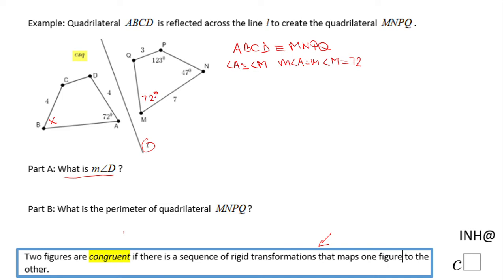Now we can find angle Q. If you notice, this is a quadrilateral, so the measure of angle P plus angle N plus angle M plus angle Q equals 360 degrees. Angle P is 123 degrees, angle N is 47 degrees, and angle M is 72 degrees, which we just found.